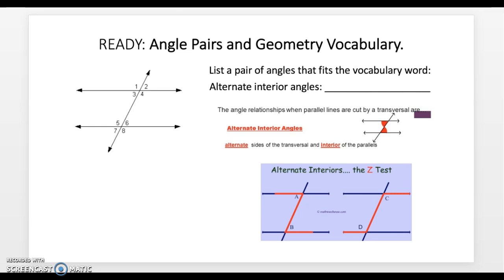Alternate interior angles are also on the alternate sides of the transversal, but now they're on the interior of the parallel lines. And so we're looking at 3 and 6 and 4 and 5, so they alternate the transversal and are on the inside of the parallel lines.